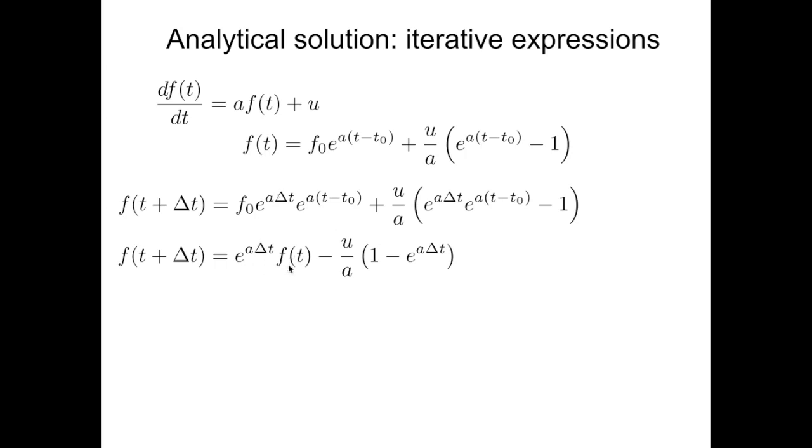You see that here f of t has to be multiplied by just a number. Delta t is known, a is known, the exponential of a number is just a number, and once more subtracted by the external term multiplied by a number. This 1 minus e to the a times delta t is again a number.